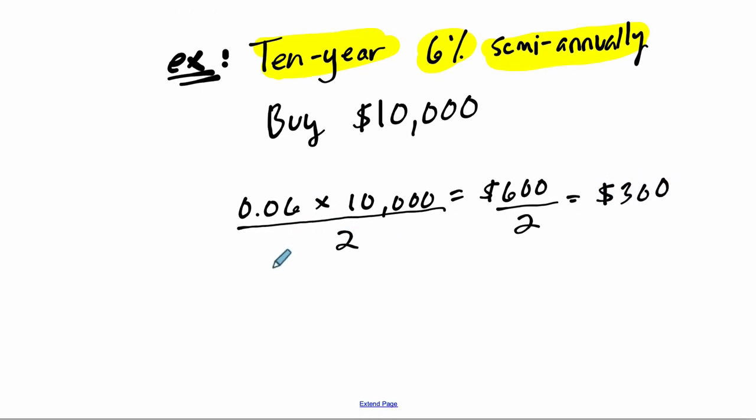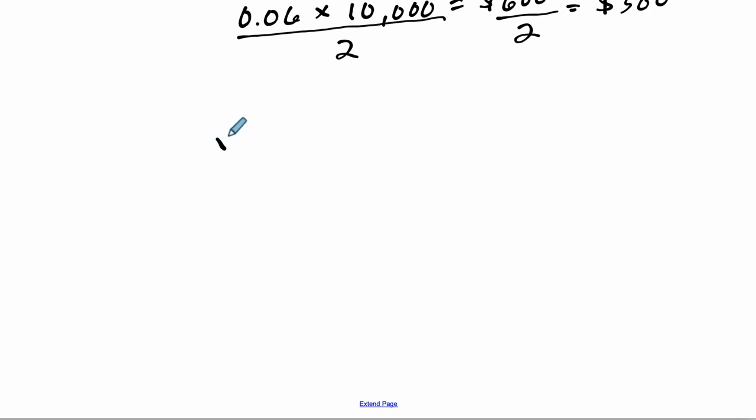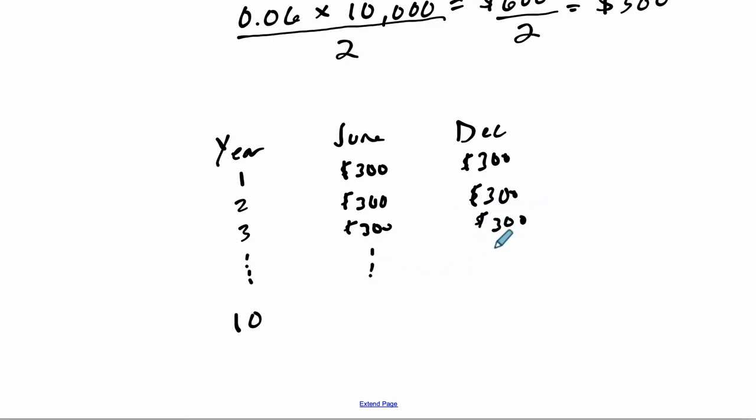And if you were tracking this over the life of this bond, it's a 10-year bond. So for 10 years, 1, 2, 3, all the way up to 10 years, what's going to happen? Let's say once in June and once in December, split the year up that way, you're going to get a $300 payment. Once in June, once in December. Every single year you get that fixed amount based on that interest rate. $300, $300, all the way for 10 years.